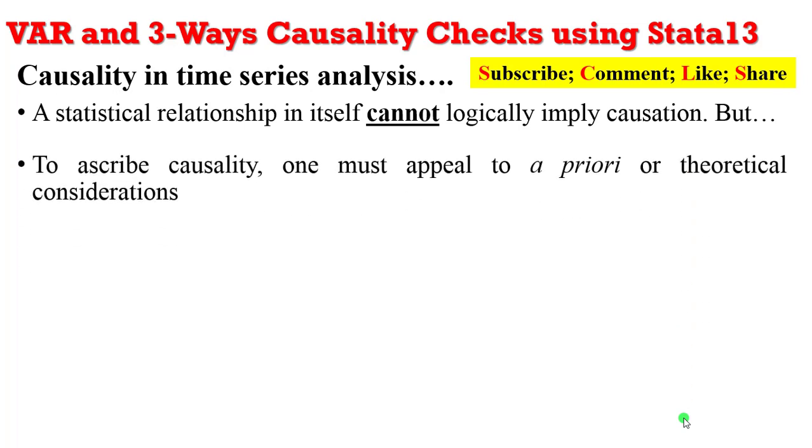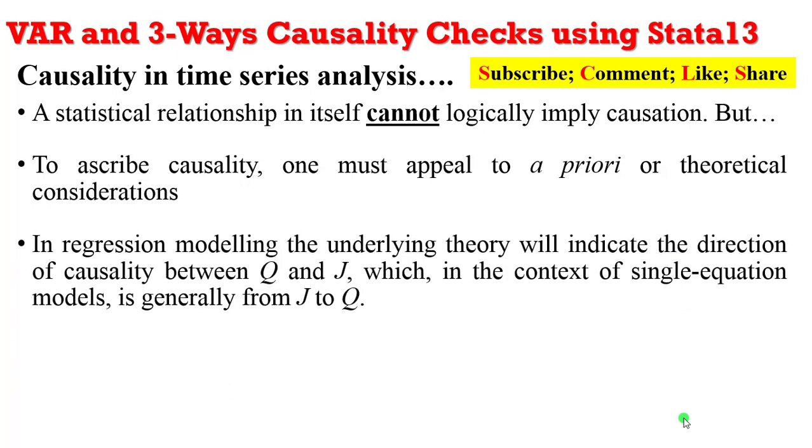To ascribe causation, one must appeal to a priori or theoretical considerations. In regression modeling, the underlying theory will indicate the direction of causality between the two variables, which in the context of a single equation is generally from the regressor to the dependent variable. And always know that the future cannot predict the past. The reverse is the case.